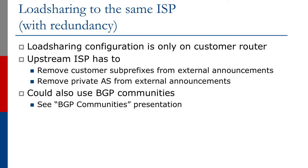Note that the load sharing configuration is only on the two customer routers. The upstream ISP simply has to remove customer prefixes and the private AS from external announcements. As we'll see later on, we could use BGP communities, and in fact in more developed networks these days, network operators prefer the use of BGP communities for this type of traffic engineering.